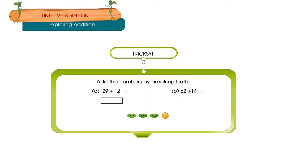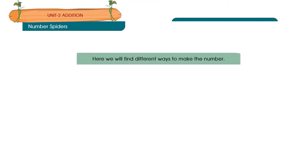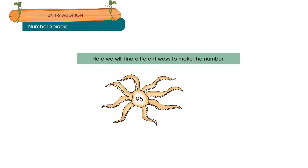Trixie: Add the numbers by breaking both. Number Spiders: Here we will find different ways to make the number 95. 50 plus 45 is equal to 95. 10 plus 85 is equal to 95. 20 plus 75 is equal to 95. 60 plus 35 is equal to 95. 40 plus 55 is equal to 95. 80 plus 15 is equal to 95. 90 plus 5 is equal to 95.